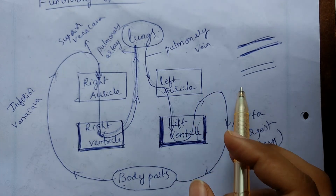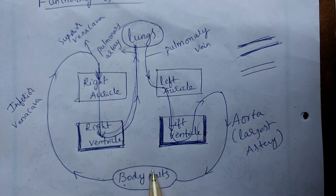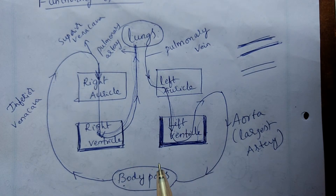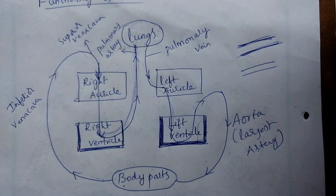So, the aorta carries blood to the body parts. This is the function of the heart — impure blood, pure blood, and pure blood transfer to the body parts.